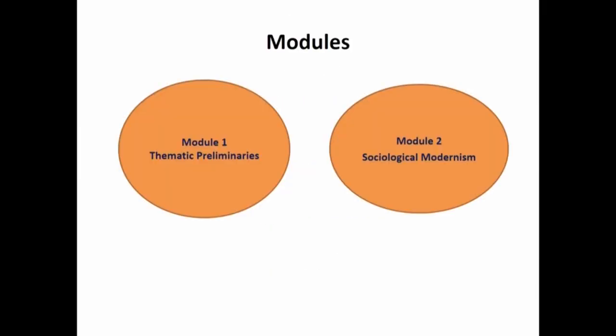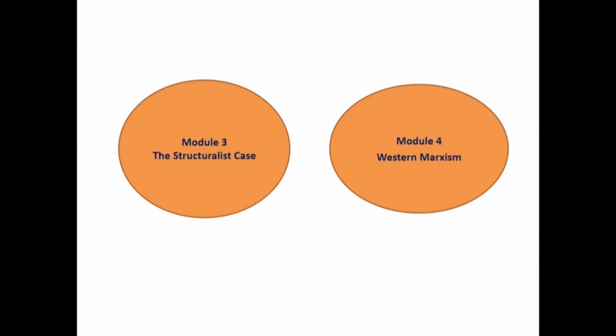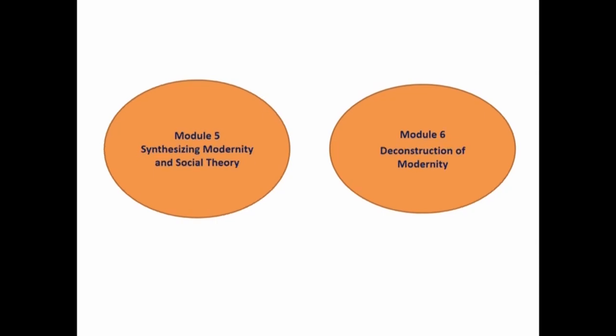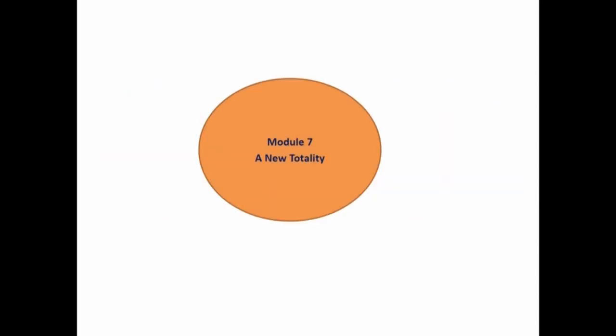Welcome to the 30th lecture of the course on Sociological Perspectives and Modernity. This is the last lecture and we will wind up with this. As you know, we have covered in this course a total of 7 modules: Module 1 - thematic preliminaries; Module 2 - Sociological Modernity; Module 3 - the Structuralist Interpretation; Module 4 - Western Marxist Perspectives on Critical Modernist Paradigms in Sociology; Module 5 - Synthesizing Modernity and Social Theory; Module 6 - Deconstruction of Modernity; and Module 7 - A New Totality.